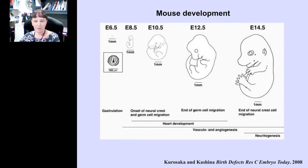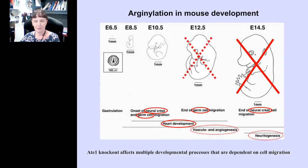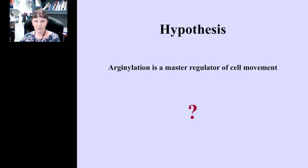We found that arginylation is essential for multiple developmental events, many of which depend on cell migration and therefore on the actin cytoskeleton. This diagram represents mouse development from E6.5 to E14.5, drawn to scale. At these stages, embryogenesis critically depends on cell migration. Through a number of mouse knockouts, my lab has now demonstrated that many of these events are affected by arginylation. Arginylation appears to be a major regulator of cell migration in development, and our hypothesis is that arginylation is the master regulator of cell movement.